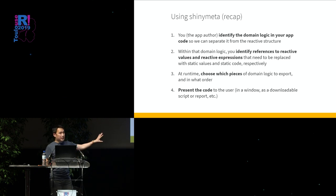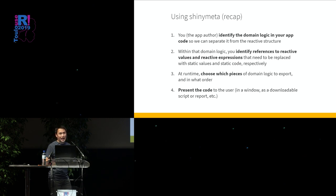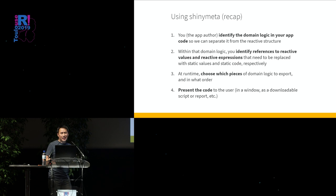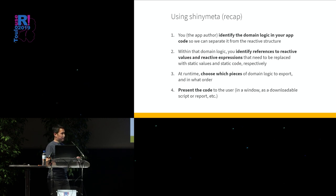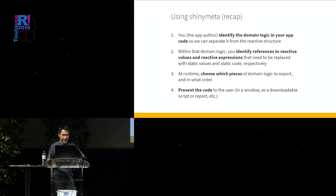To recap the four steps using Shiny Meta: one, identify the domain logic using `meta_reactive()` and that family of functions. Two, use `!!` (bang-bang) mechanically everywhere you see a reactive value being read or a reactive expression being called. Three, choose which pieces of domain logic to export using `expand_chain()`. Four, present the code to the user using the family of zip-generating and code-display functions.